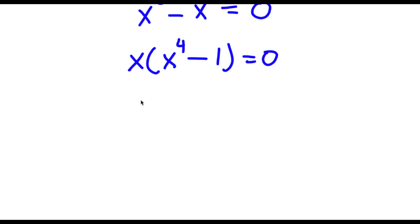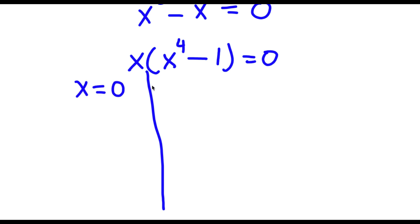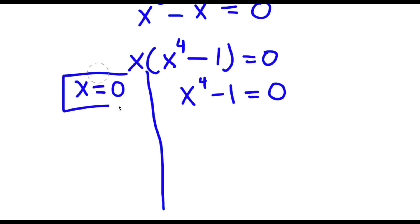And now this gives me two equations. I have x is equal to 0, and I also have x to the power of 4 minus 1 is equal to 0. So x equals 0 is already a solution right here — we already have one solution to our original equation, and we can find our other solutions from the second equation.